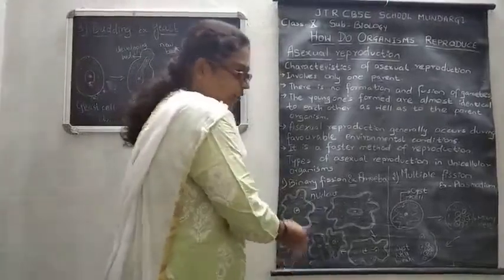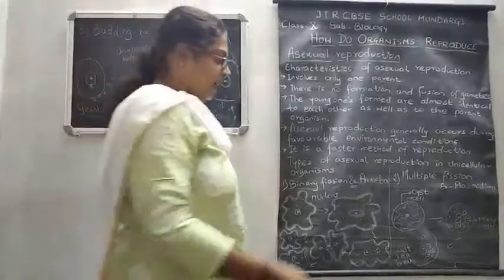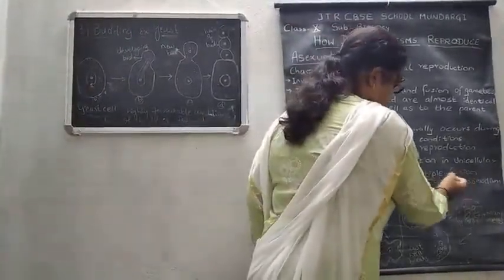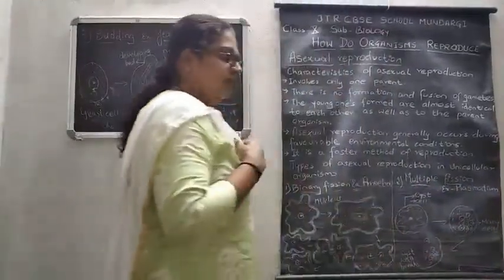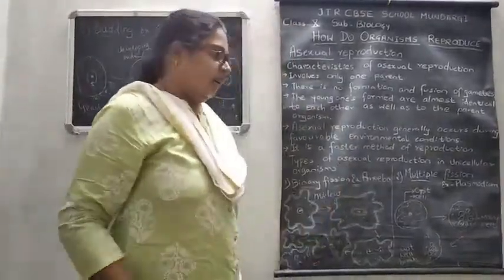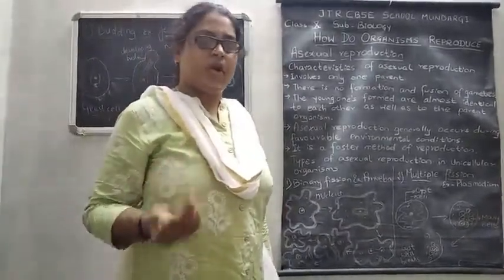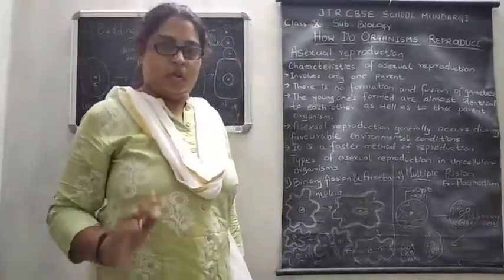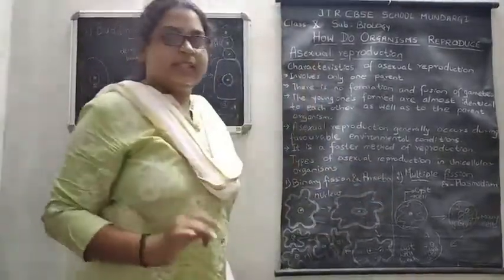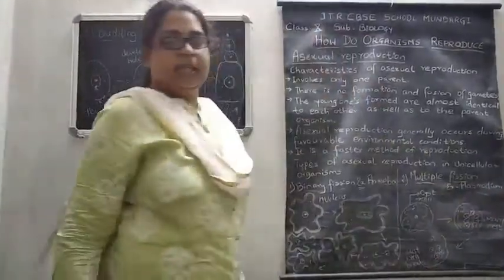So in binary fission, from a single cell two identical types of cells are formed. Now moving on to the second type: multiple fission. Fission means division of a cell, and multiple means from the division of a single cell many daughter cells are formed.